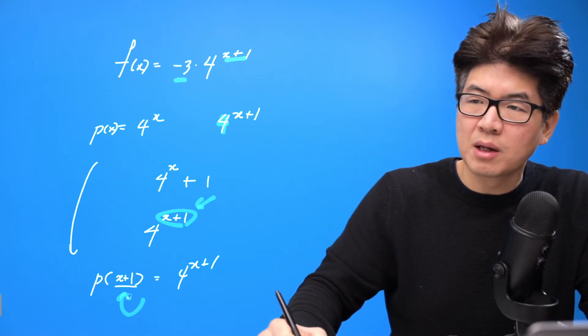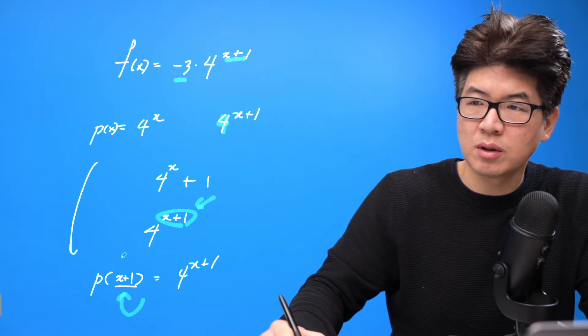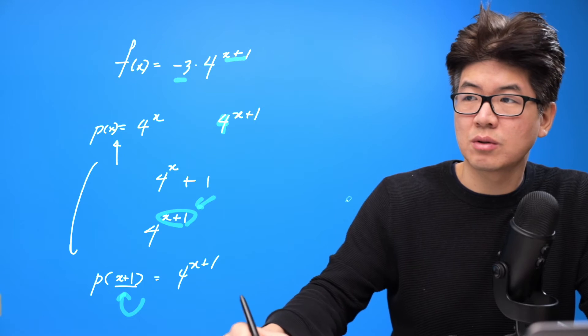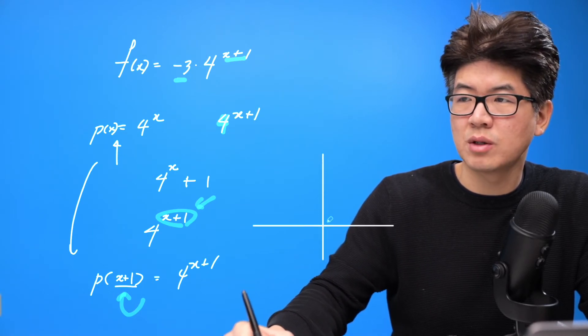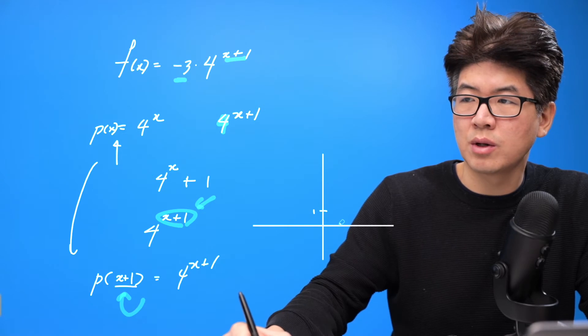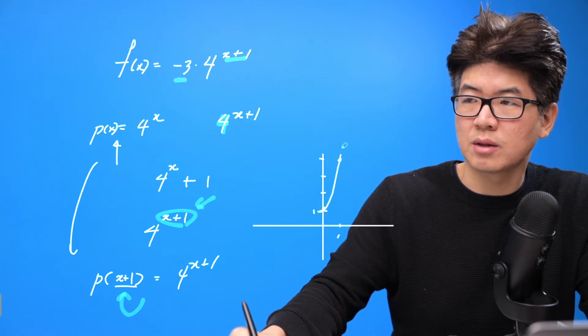Okay, because we added by one, right, because we added by one, to get the same y value as this function, okay, so that function there, when it's zero, it's one. And when it's one, it's four. Okay, so the function looks like this.